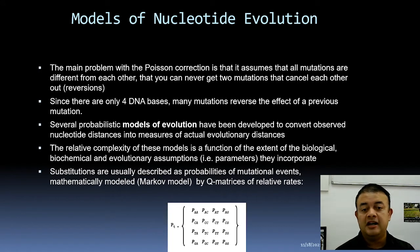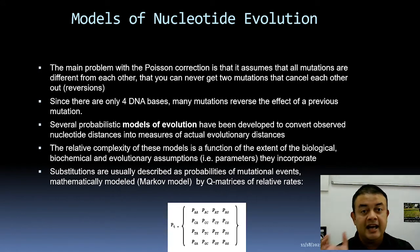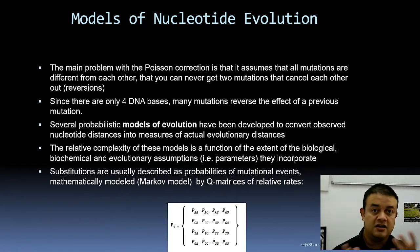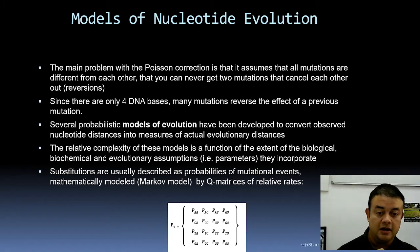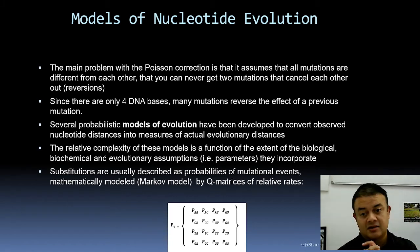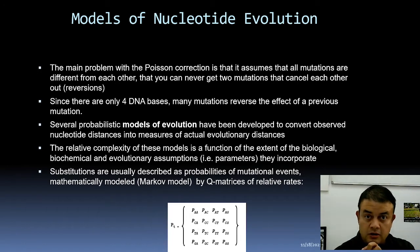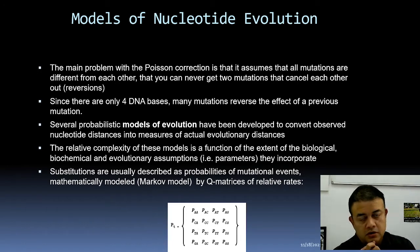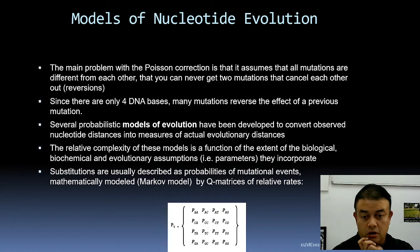Substitutions are usually described by probabilities of mutational events — like A to G, what is the probability; A to T, what is the probability. You need a matrix for this. The model uses a Markov model, a probability-based Markov model with a Q-matrix.